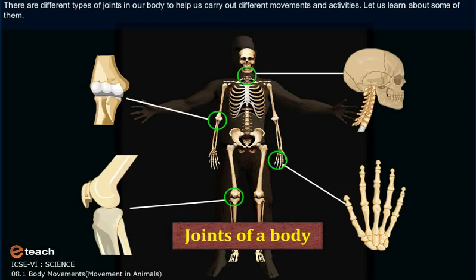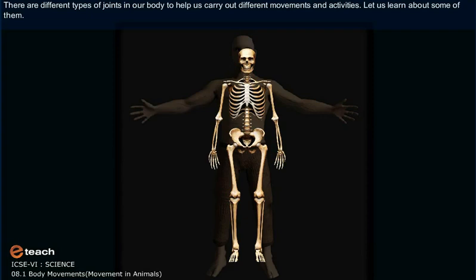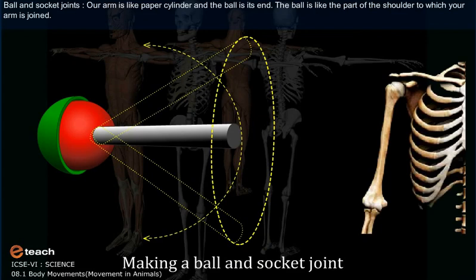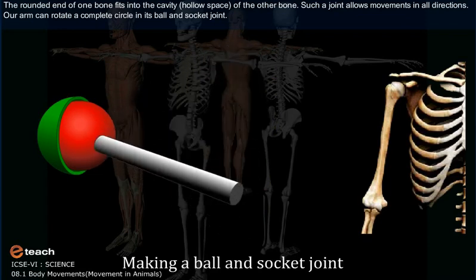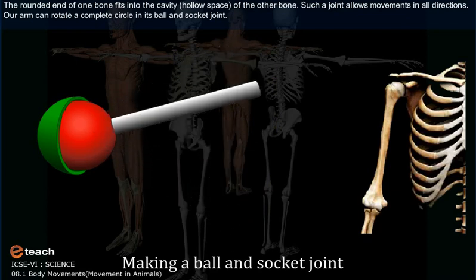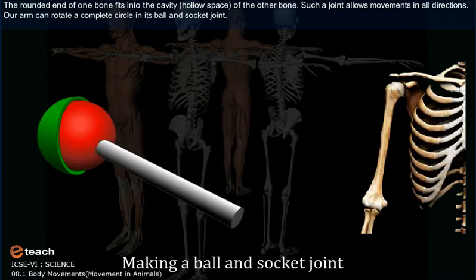There are different types of joints in our body to help us carry out different movements and activities. Let us learn about some of them. Ball and socket joints: our arm is like a paper cylinder and the ball is at its end. The ball is like the part of the shoulder to which your arm is joined. The rounded end of one bone fits into the cavity, or hollow space, of the other bone. Such a joint allows movements in all directions. Our arm can rotate a complete circle in its ball and socket joint.